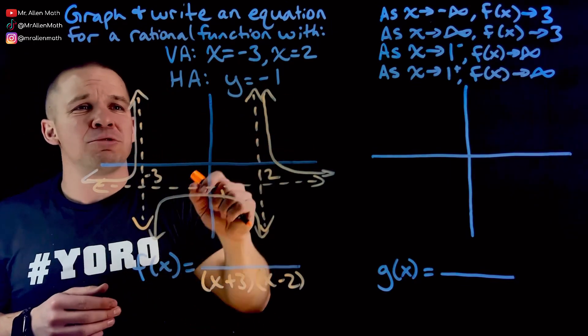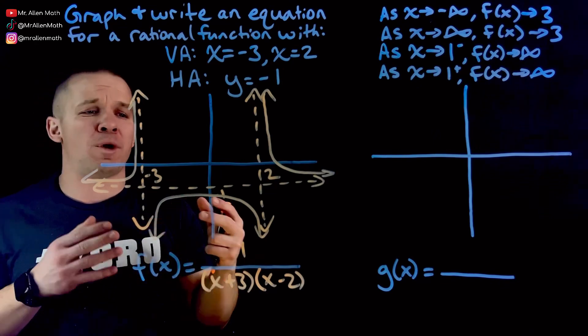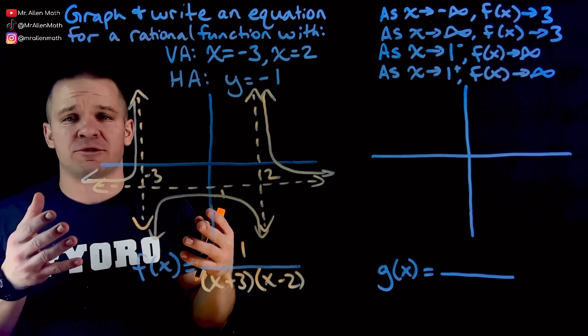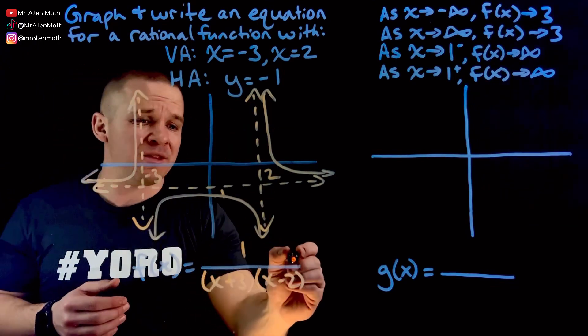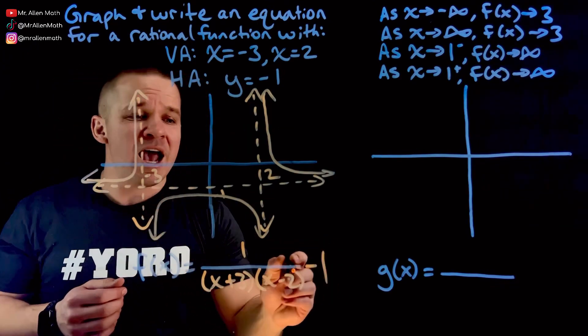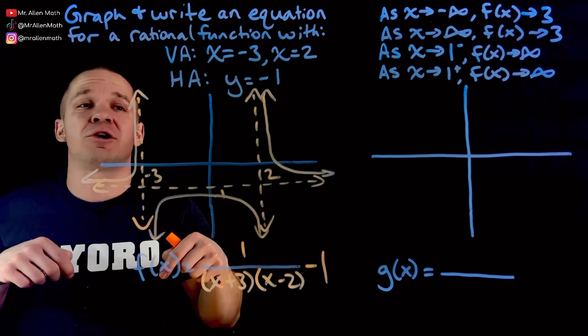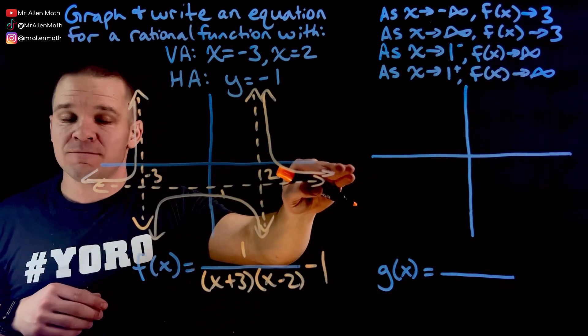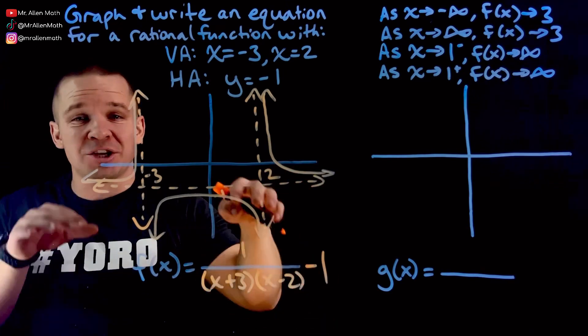Now the last thing I'm going to do is take into account this horizontal asymptote. There's different ways to do that. One of them is just with basic transformations. We're going to throw that negative one on the outside of my function. And now that moves the original parent function down one.